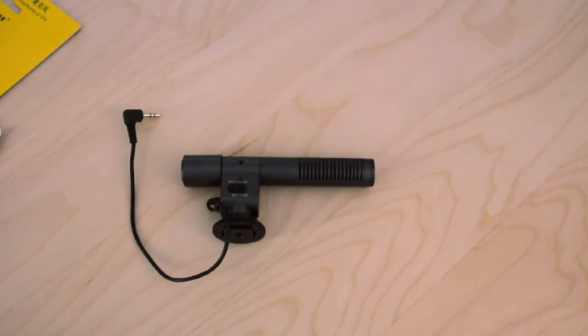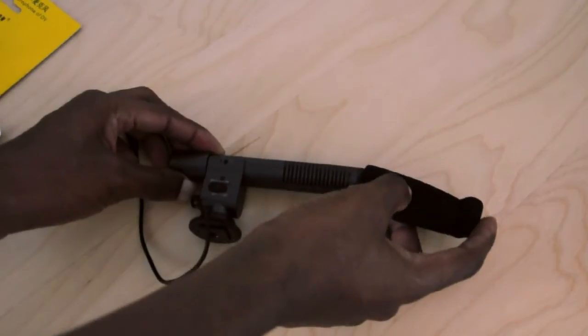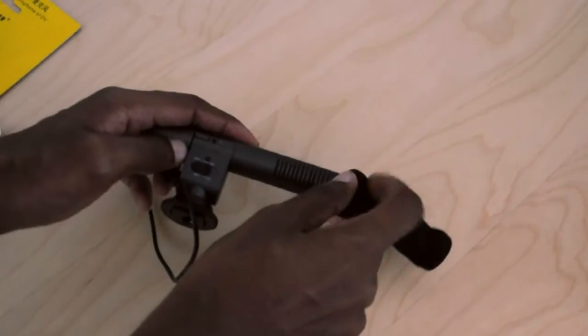Now for those that are interested let me just give you a brief install tutorial here. The first thing you want to do is grab your windscreen and put that over the front portion of the shotgun mic.